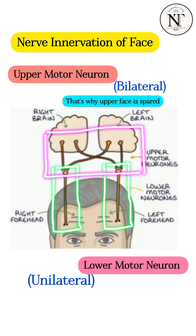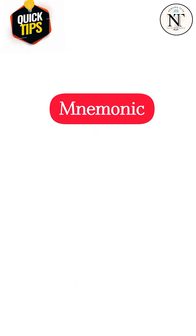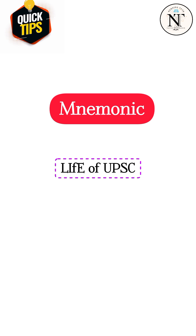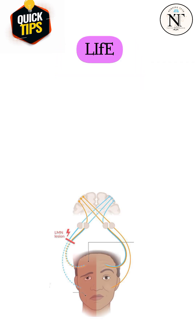Now here is a simple mnemonic to remember the difference between upper motor neuron lesion and lower motor neuron lesion. The mnemonic is 'A Life of UPSC.' Let's break it down. For lower motor neuron lesion, we use 'LIFE.'